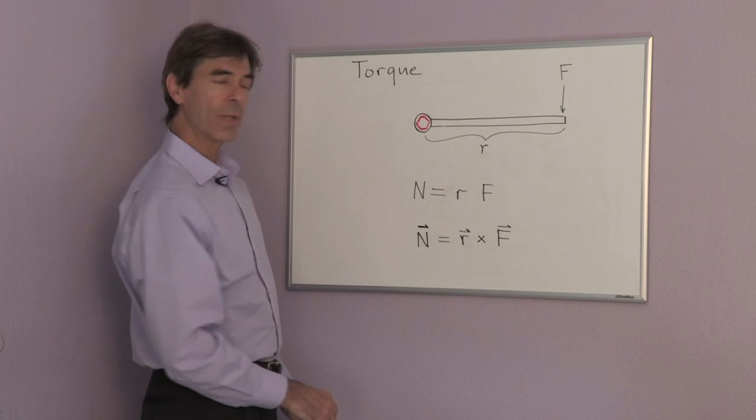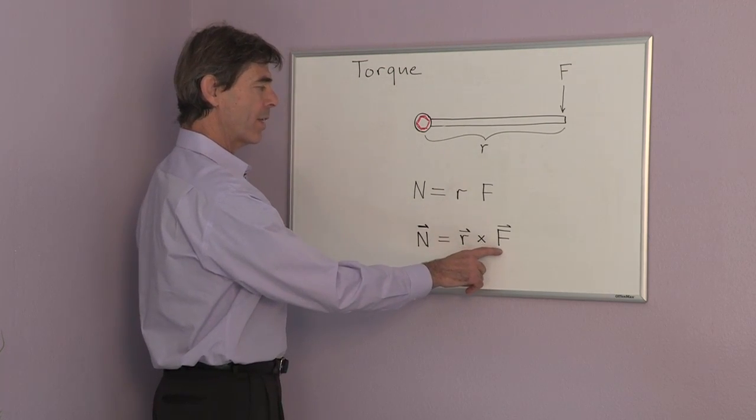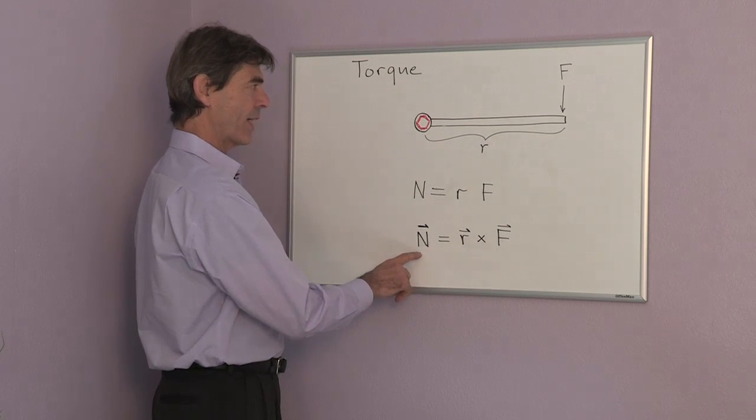In vector notation, you would actually take the cross product of the radial vector with the force vector to give you the torque vector.